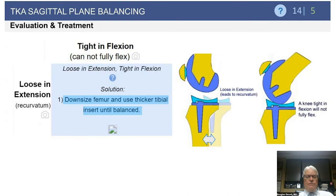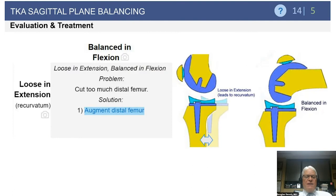Next is loose in extension and tight in flexion. In this situation, you often want to downsize your femoral component, which will get rid of your tightness in flexion, and then you can increase your tibial bearing thickness a bit until you are balanced.